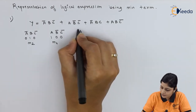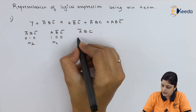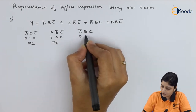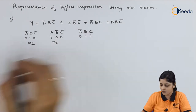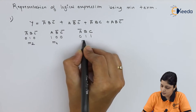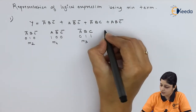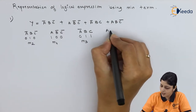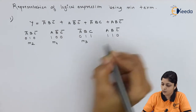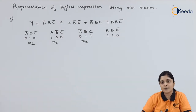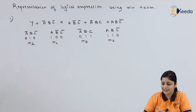Then you have ā·b·c — 0 1 1 is the binary for 3, so you write m3. After that you have a·b·c̄, that is 1 1 0, which is the binary for 6, so you write m6.